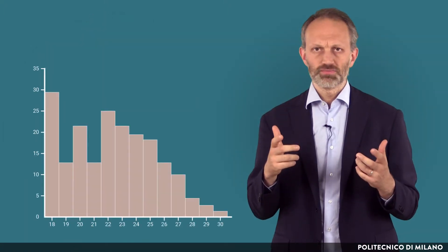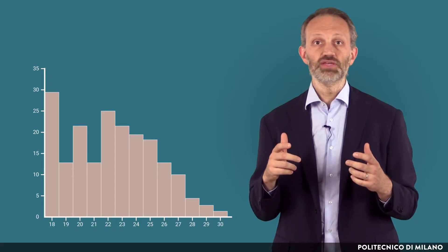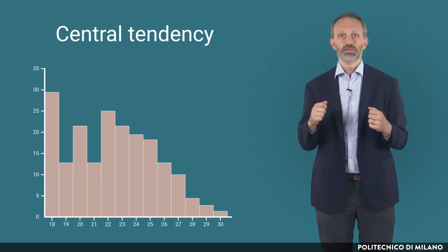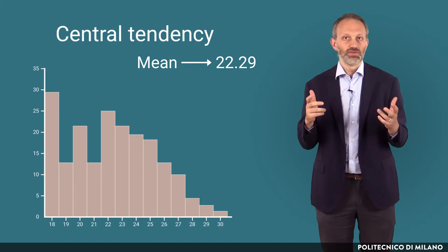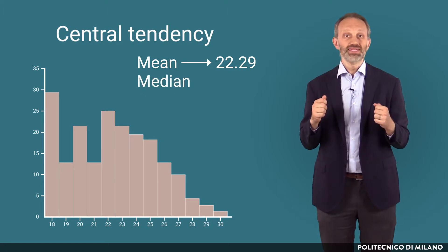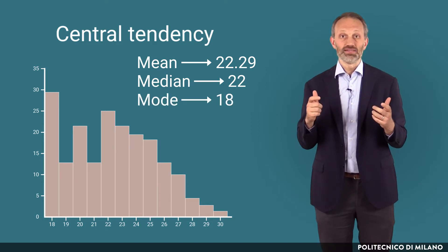In this example of exam grades, we can see the difference among the three measures of central tendency. The mean is 22.29 — note the grades are only integer values, while the mean can be in between two grades. The median is 22, that is, the central grade, while the mode is 18, which is the most frequent grade.